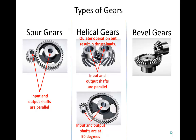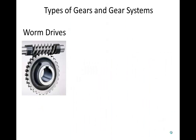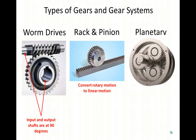Bevel gears look like this and enable right-angled shafts. There are also helical bevel gears that are quieter during operation. Worm drives accommodate right-angled shafts and allow very large reduction ratios in a small compact space. However, they are not as efficient as other types of gears, since the worm gear teeth slide on the pinion gear teeth, resulting in energy loss in the form of heat. Rack and pinion systems convert rotational motion into linear motion, and planetary gear systems have been developed to create complex and innovative reduction ratio combinations.